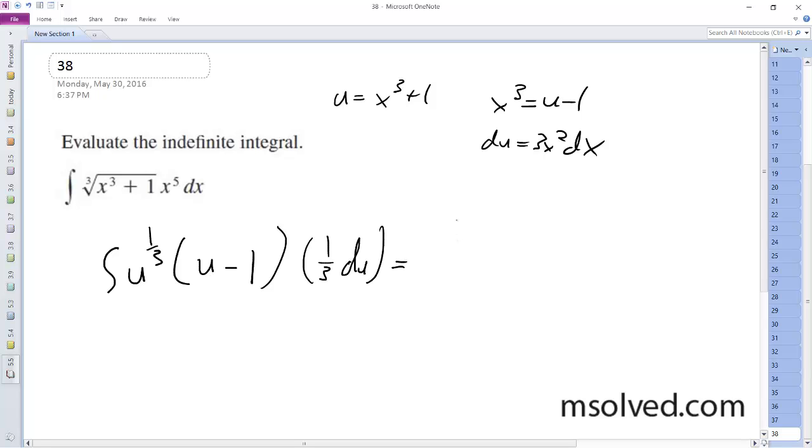so I end up here with one-third integral of u to the four-thirds minus u to the one-third du.